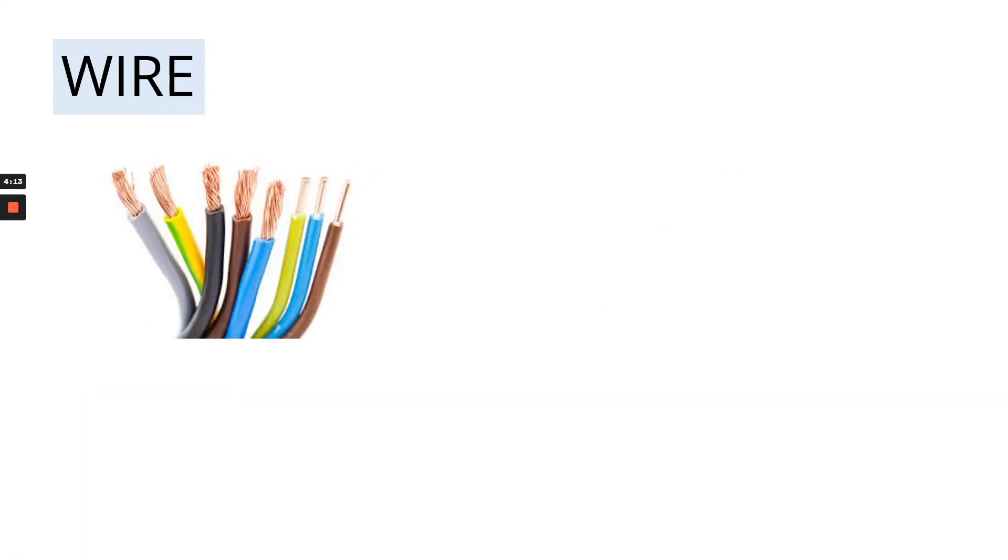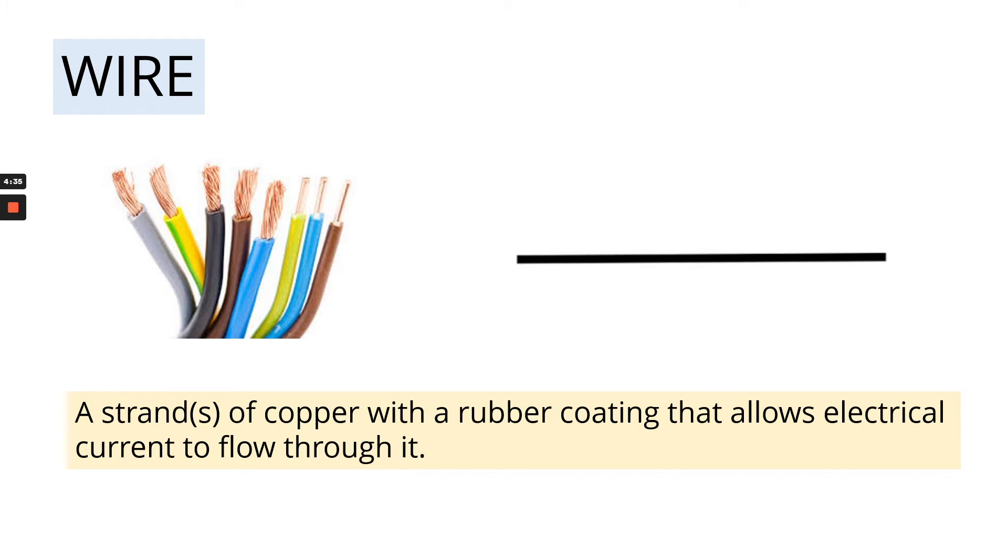Our next component is a wire. So electrical wire is normally made from copper, like individual strands of copper, and it's coated in a rubber or plastic coating to protect it. This is the easiest symbol that you will have, and it's just a straight line. And the description of wire is that they are strands of copper with a rubber coating that allows electrical current to flow through it. So the copper is the part that allows electrical current to flow through it, not the rubber. The rubber is an electrical insulator, so it won't allow electrical current to pass through it. Therefore, if you touch an electrical wire with the rubber around it, you will not get an electric shock.